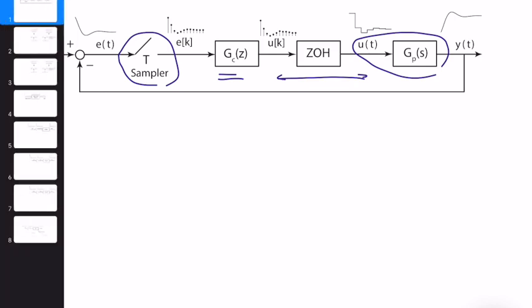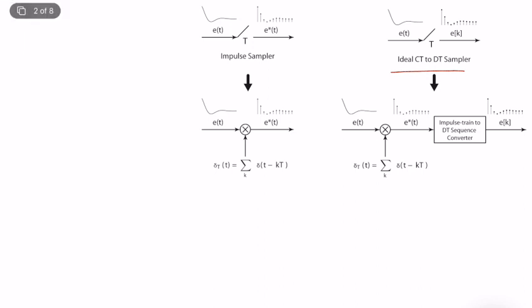Let's start with the sampler and quickly review our fundamental knowledge. A sampler can be idealized as an ideal continuous-time to discrete-time sampler, where our continuous-time signal is sampled into a purely discrete-time signal — from e(t) to e(k). In this case, we technically lose the information of capital T, the sampling time or sampling frequency.